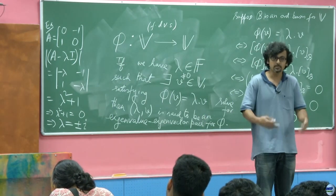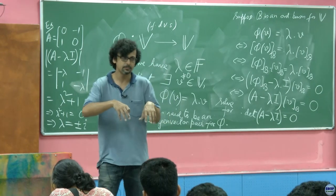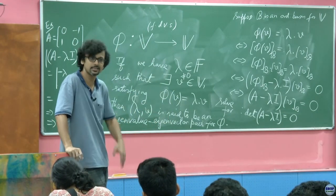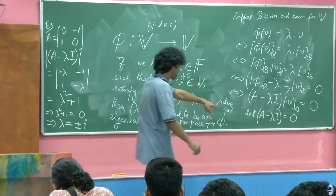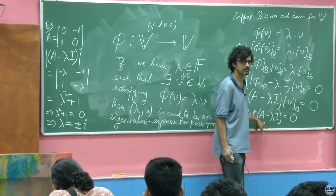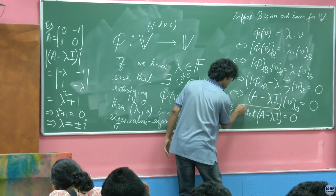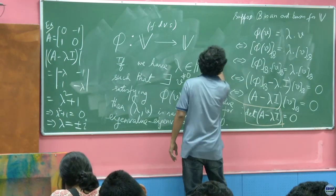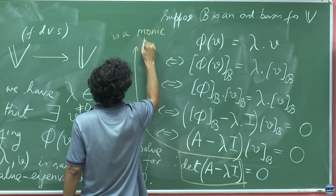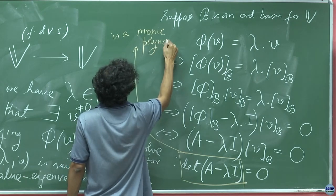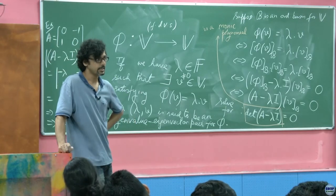This is fundamentally the property of the complex field — it is algebraically closed. An algebraically closed field means: take any polynomial whose coefficients come from that field, and the roots of that polynomial must also belong to that field. The determinant of (A minus lambda I) is always a polynomial, and in fact it is a monic polynomial — one where the coefficient of the highest-degree term is unity.